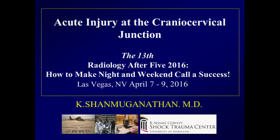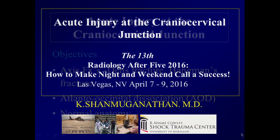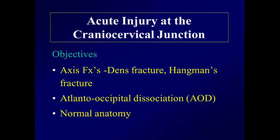The objectives of this talk are to look at two injuries that occur at the axis, the C2 vertebral body: the dens fracture and the hangman's fracture. We'll also look at another injury which was rare but is becoming more common, partly because of whole-body CT being performed, which allows better evaluation of the cranial cervical junction — and we're starting to see atlanto-occipital dissociations.